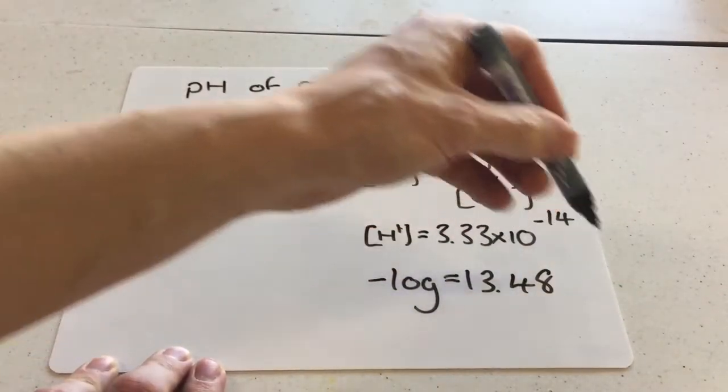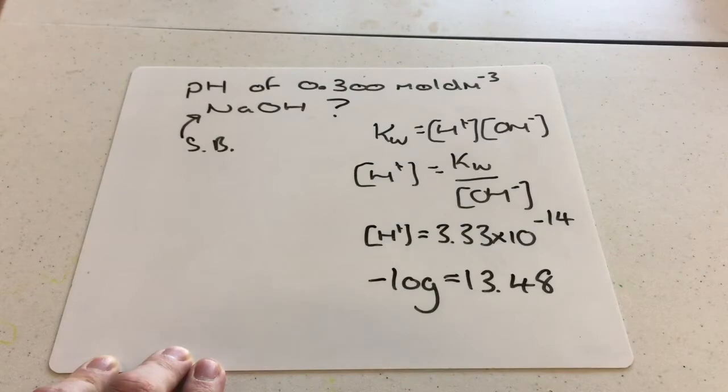So technically it gives you 13.477, and then you can round it to 13.48. So some people find that to be a lot, they think that's quite difficult, that it can be quite strenuous, and it's a lot to remember. So here's a shortcut.